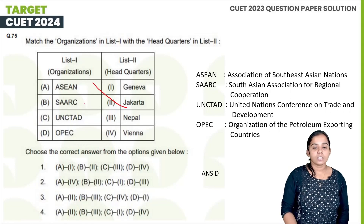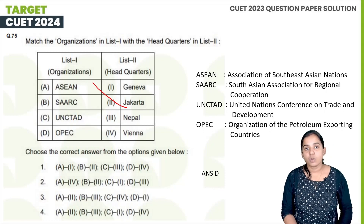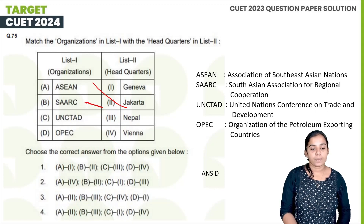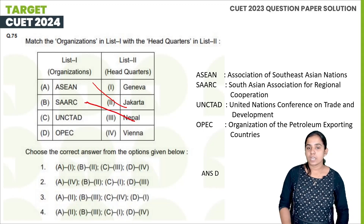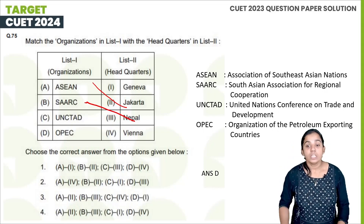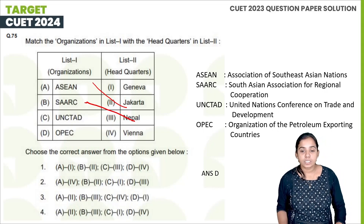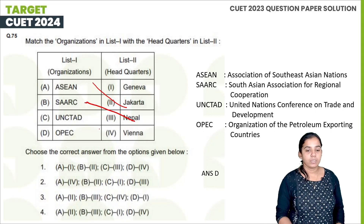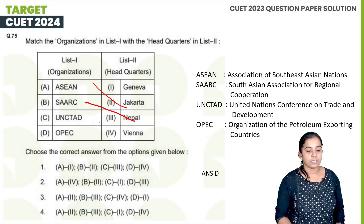South Asian Association for Regional Cooperation (SAARC) has its headquarters in Nepal. And UNCTAD — the United Nations Conference on Trade and Development — is headquartered in Geneva.